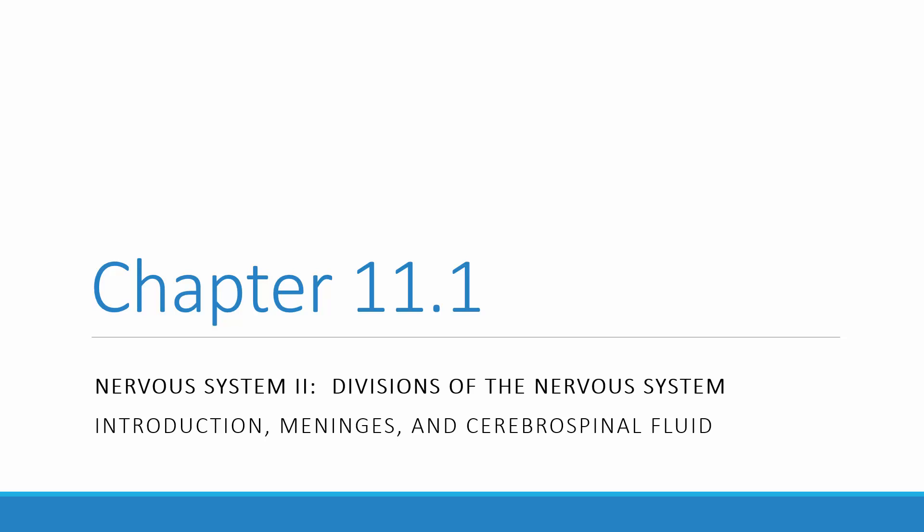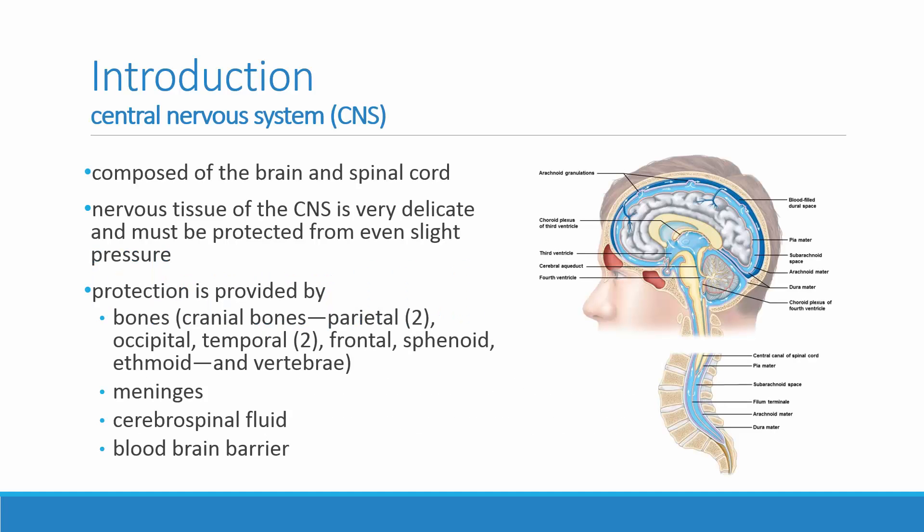We are in chapter 11 now, which is looking at the divisions of the nervous system. The central nervous system and the peripheral nervous system are the primary divisions we'll be looking at. We'll start by looking at the central nervous system — the brain and the spinal cord — and talking about the protective features that help to prevent any damage occurring to the brain.